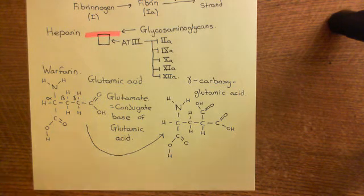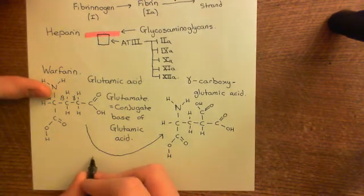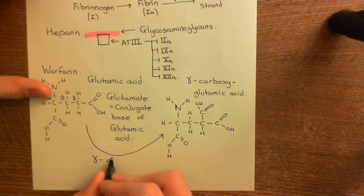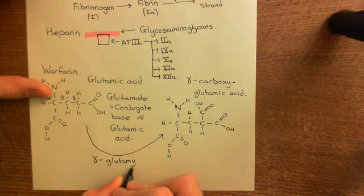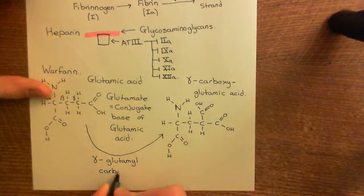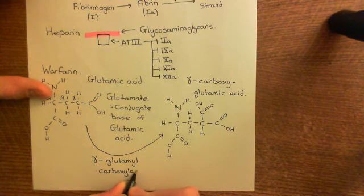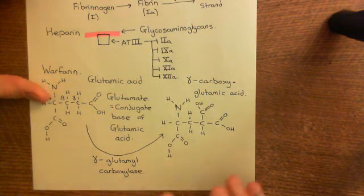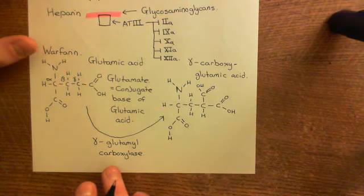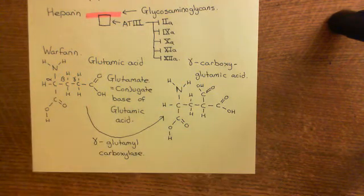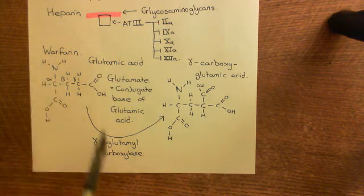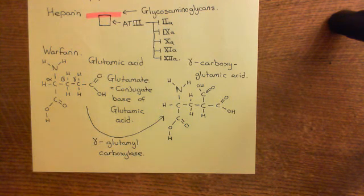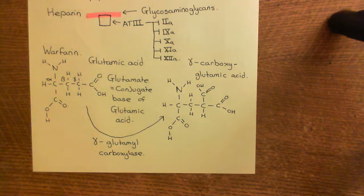This modification of glutamic acid to gamma-carboxyglutamic acid is carried out by the enzyme gamma-glutamyl carboxylase. In order to understand how warfarin works, we need to understand how this enzyme works — how it actually adds this carboxylic acid group on. Unfortunately it's not as simple as warfarin just inhibiting this enzyme directly; it's a more convoluted, subtle mechanism. We'll continue this discussion of warfarin in the next video.